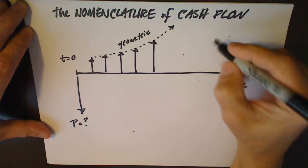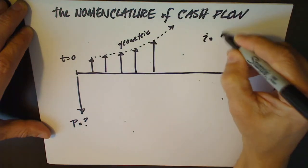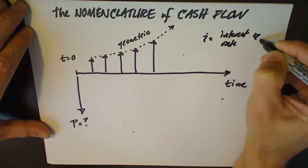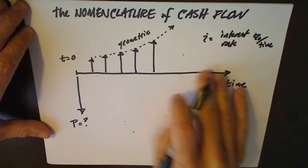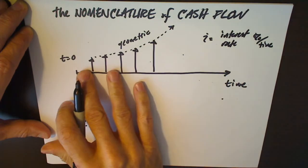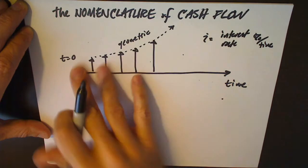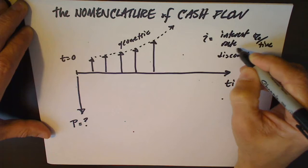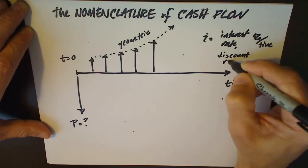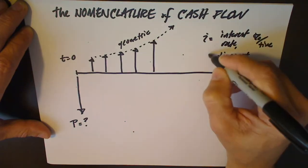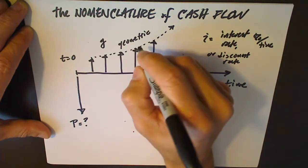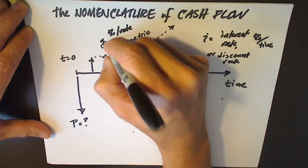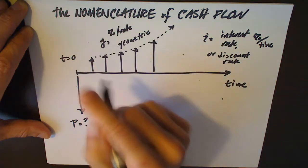The first one, the interest rate, is expressed as a percentage per unit time, and this can either be the interest rate or the discount rate. Interest rate if we're moving forward in time, discount rate if we're moving backward in time. They both have the same units of percent per year. But now there's also this little g which is a growth rate, and that's also expressed in percent per year.